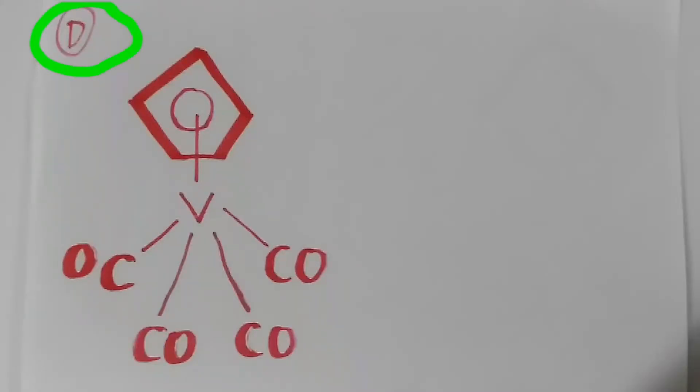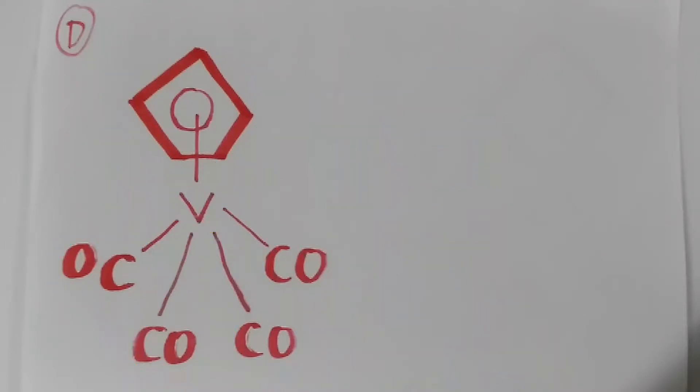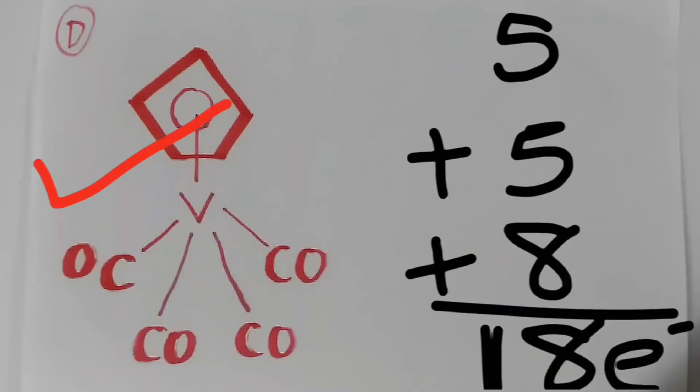In the compound D, this ring will donate 5 electrons. Vanadium donates 5 electrons. The 4 carbonyl groups donate 8 electrons. So the total electron count will be 18.